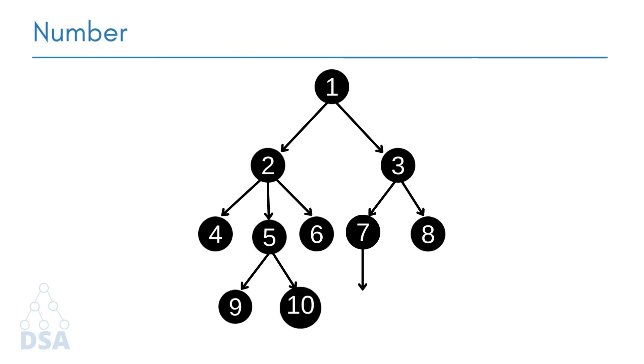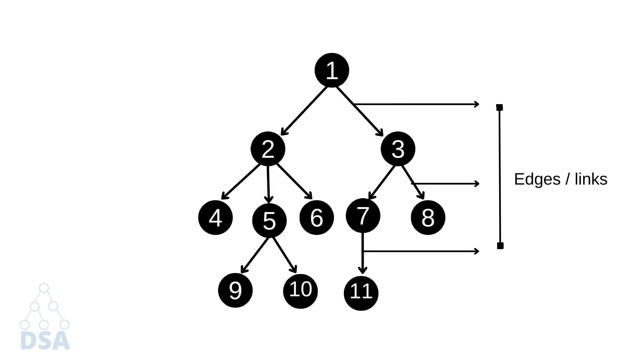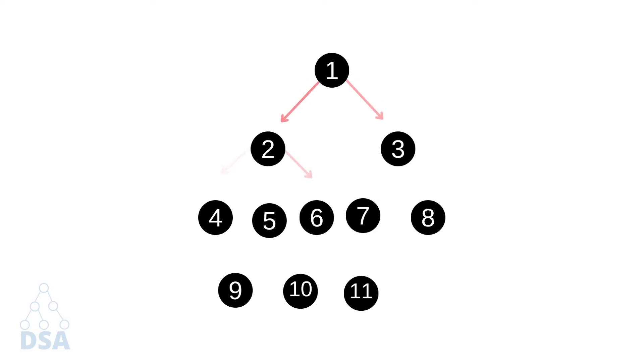The next property we will see is number of edges. If there are n nodes, then there would be n-1 edges. Each arrow in the structure represents the link or path. Each node except the root node will have at least one incoming link known as edge.